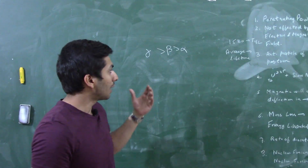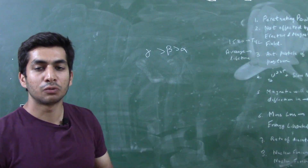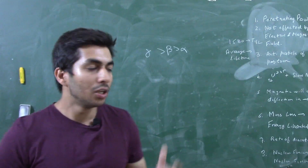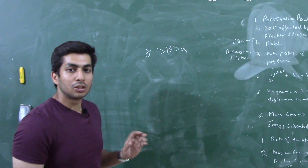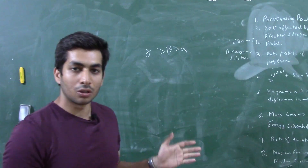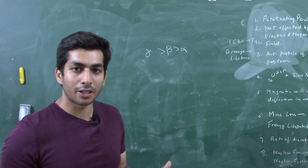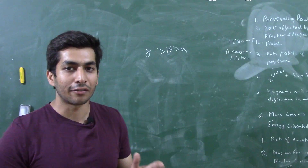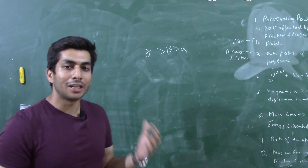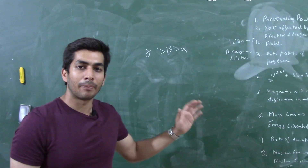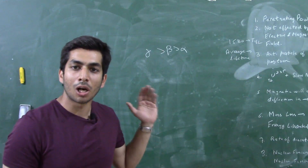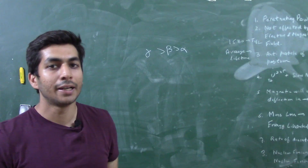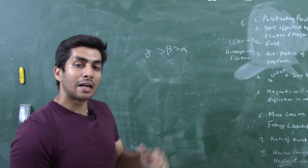The next question is: which of the three particles will not be affected by an electric or magnetic field? Among them, gamma particles will not be affected because they are neutral — they are not charged particles. So gamma particles would not be affected by any magnetic or electric field. In the presence of an electric or magnetic field, alpha and beta particles might deflect, but gamma particles would continue in the same direction.